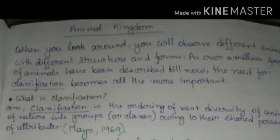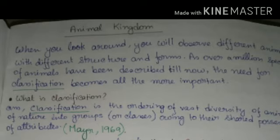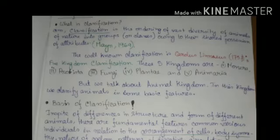Animal Kingdom. When you look around, you will observe different animals with different structures and forms. As over a million species of animals have been described till now, the need for classification becomes all the more important. Classification is the ordering of vast diversity of animals of nature into groups or classes, owing their shared position of attributes. It is according to Meares, 1969.